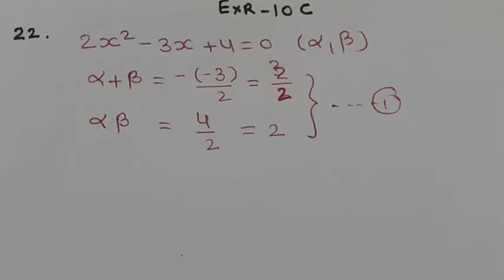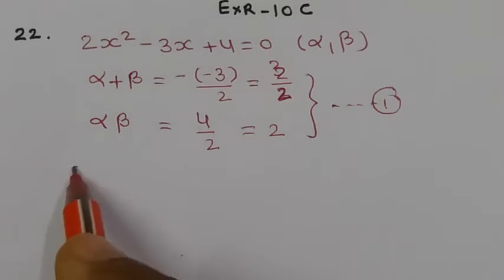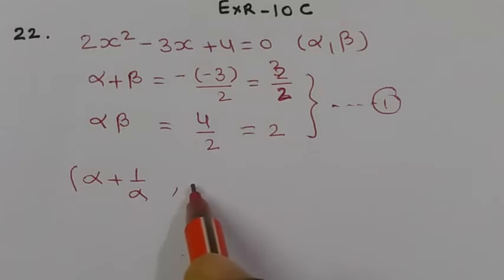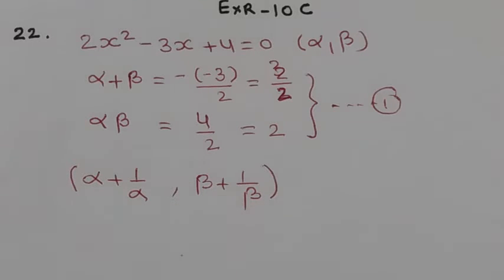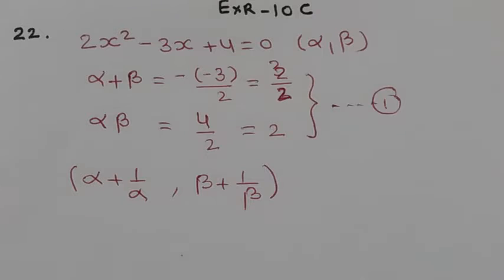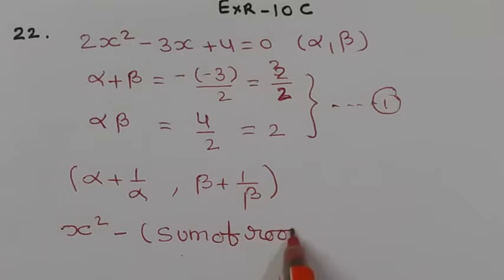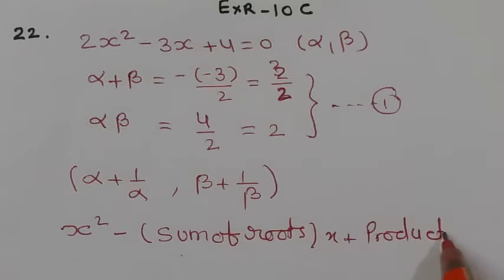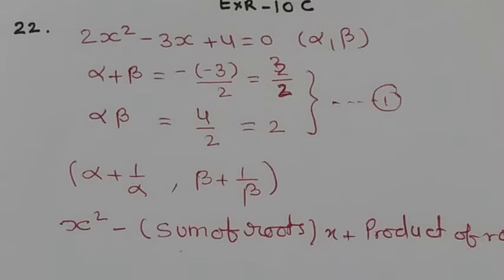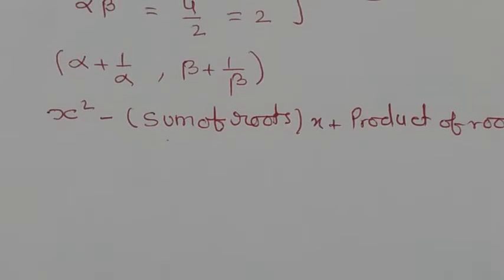The question asks us to find an equation whose roots are (alpha + 1/alpha) and (beta + 1/beta). To form this new equation, we need its sum of roots and product of roots, using the form x² - (sum of roots)x + (product of roots) = 0. So let's first find the sum and product of these new roots.